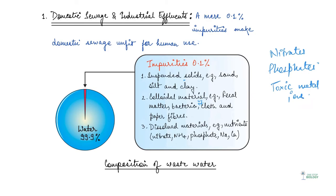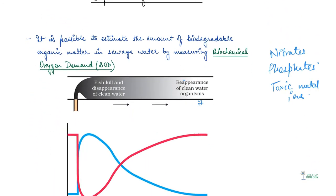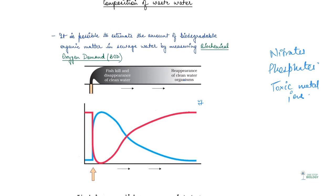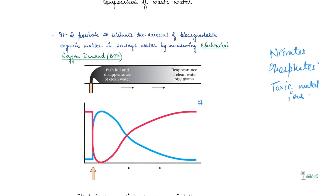So domestic sewage primarily contains biodegradable organic matter, and this readily decomposes. Now all thanks to the bacteria or other microorganisms, which basically can multiply using organic substances as substrates and they utilize some of the components of sewage. Now it is possible to estimate the amount of biodegradable organic matter in sewage water by measuring the biochemical oxygen demand. So basically, we will understand what it is exactly. It is known as BOD.